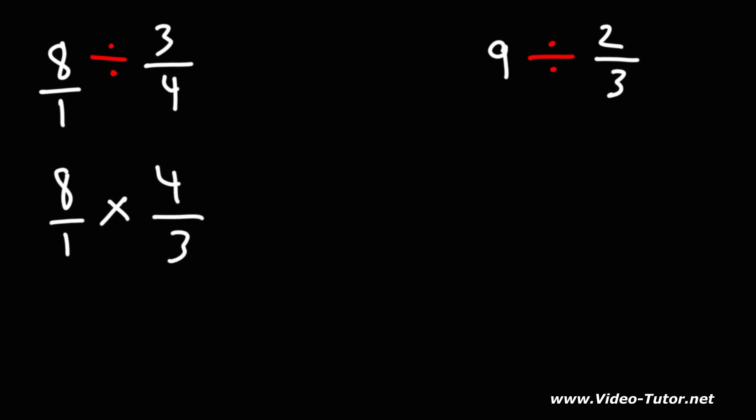So now we're multiplying two fractions, and to do that we could just multiply across. 8 times 4 is 32.